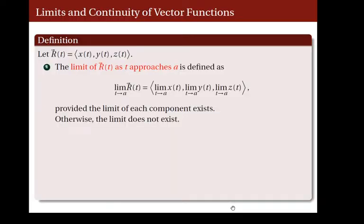Given a vector-valued function r, whose coordinates are x, y, and z, we define the limit of this function r of t as t approaches a as the limit of the components x, y, and z. So, the limit of r of t as t approaches a is the vector-valued function whose components are the limit of x of t as t approaches a, the limit of y of t as t approaches a, and the limit of z of t as t approaches a, provided that the limits of the functions x, y, and z exist. Otherwise, we say that the limit of r is non-existent or the limit does not exist.